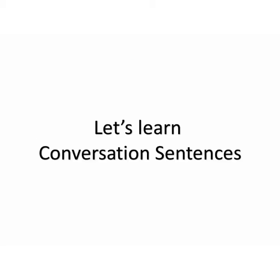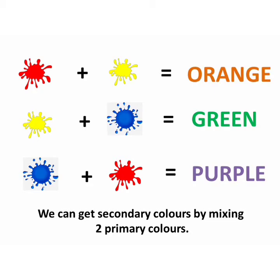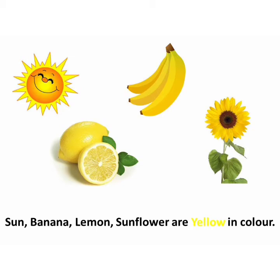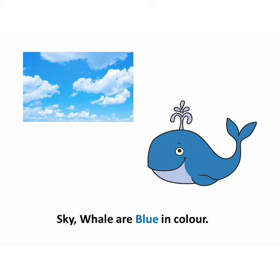Let's learn conversation sentences on primary colors. There are three primary colors. The colors are red, yellow and blue. We can get secondary colors by mixing two primary colors. Sun, banana, lemon, sunflower are yellow in color. Apple, rose, tomato, ladybug are red in color. Sky, whale are blue in color.